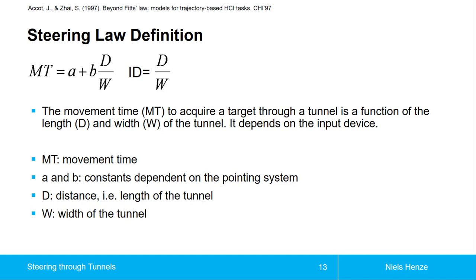So we cannot expect to conduct the Fitts' law experiment, determine A and B, and then just put that into the steering law. That wouldn't work and the predictions would be far off. But the idea behind this constant is the same.